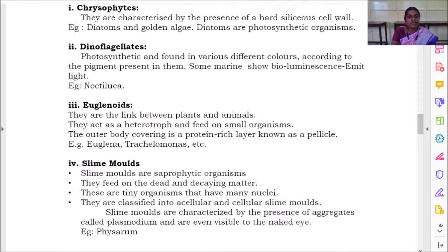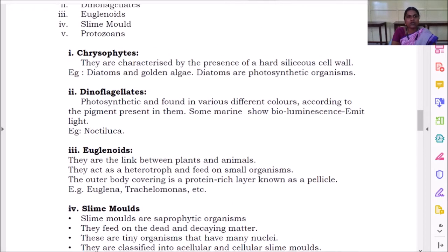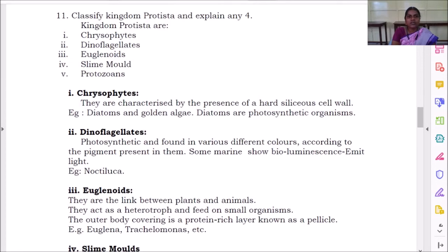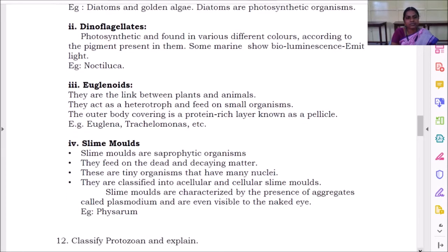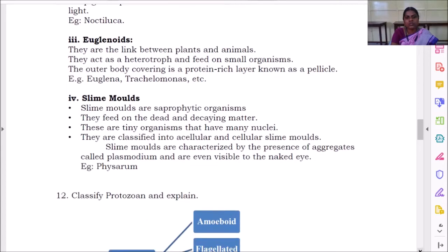So what all we have studied? Under kingdom protista, we have five: chrysophytes, dinoflagellates, euglenoids, slime molds, and protozoans. Fine.